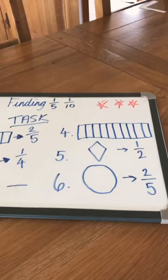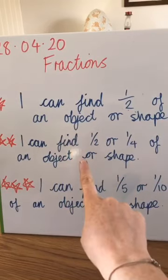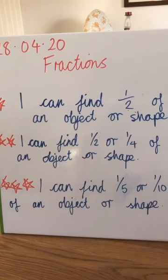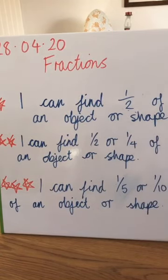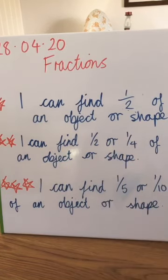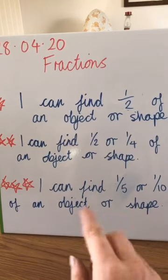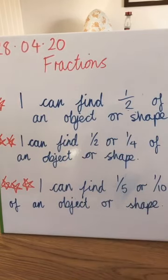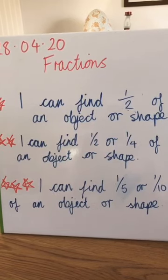You will also have sheets online to fill out. As our fraction lesson finishes for today, have a look at the success criteria to see if you've been successful. If you have managed to find half of an object or shape, tick star one. If you can find half or a quarter, tick star two. And if you can find a fifth or a tenth of an object or a shape, tick star three. There are activities online that you can try, but if you've had a go at the tasks today, that's fabulous. Have a good day!